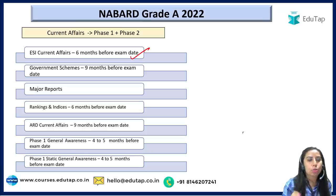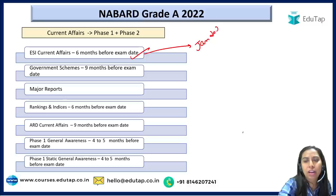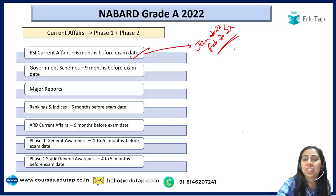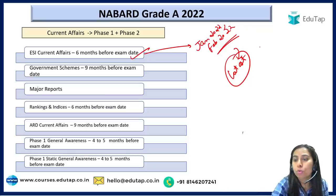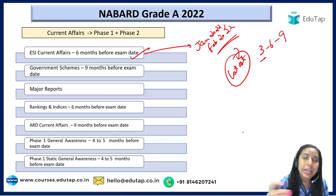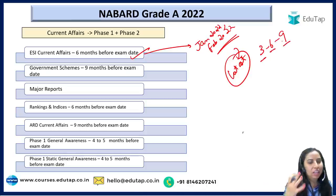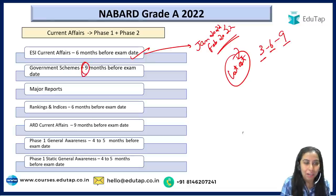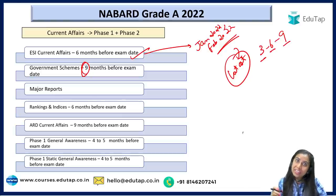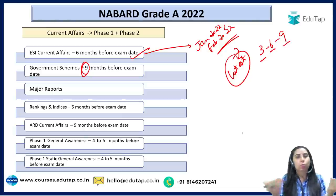For ESI current affairs, you should cover six months before the examination date — my suggestion is to start from January 2022. If that is difficult, start from February at minimum. Start from the latest month, because latest months are most important. The rule of current affairs is: latest three months — most important; next three — next important; next three — slightly less important. For government schemes, nine months preparation is required — cover schemes that have been in the news and newly released schemes.